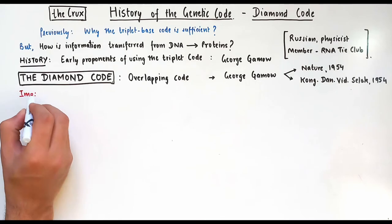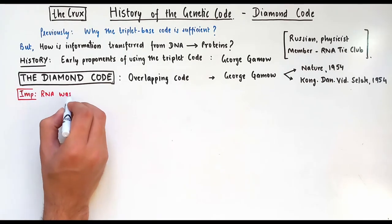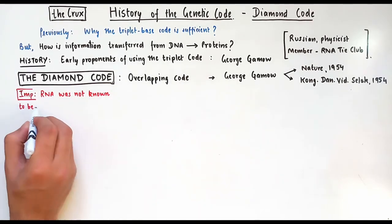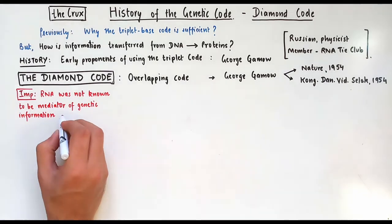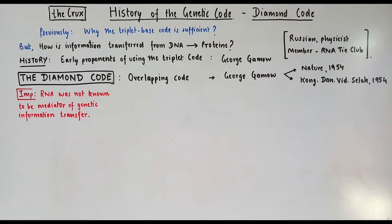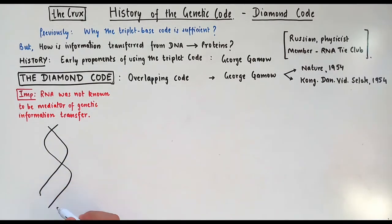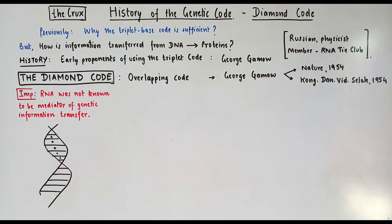Let's discuss the diamond code in more detail. So the structure of DNA was found to be the double helix, and George noticed the space between the base pairs and postulated that these holes as he called them might be the place for amino acids to fit.